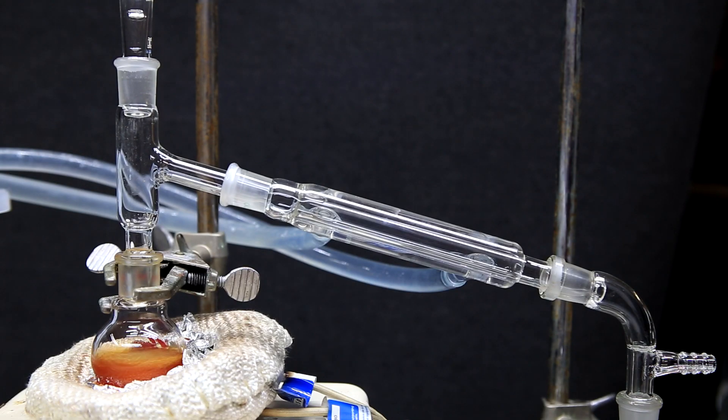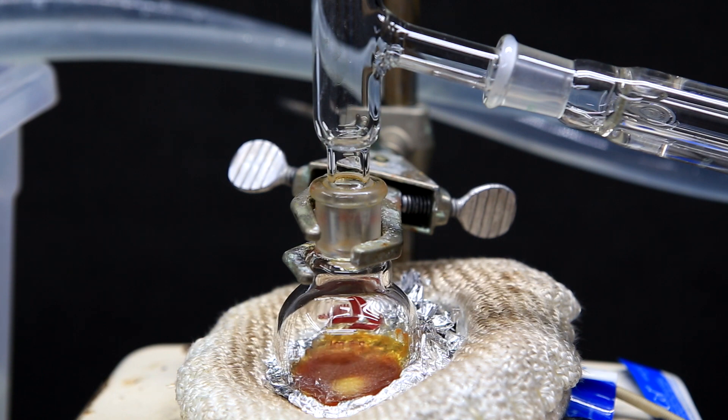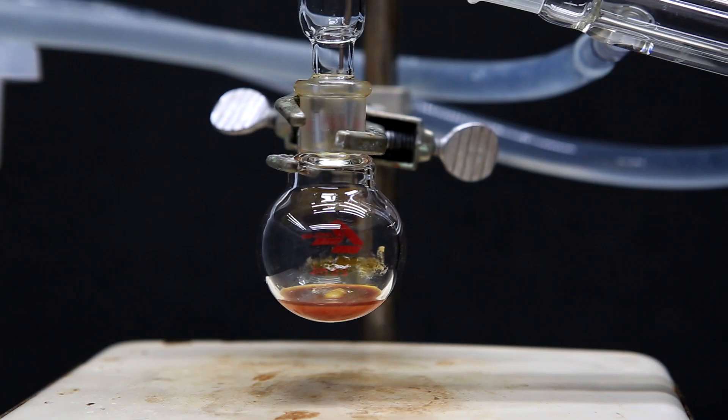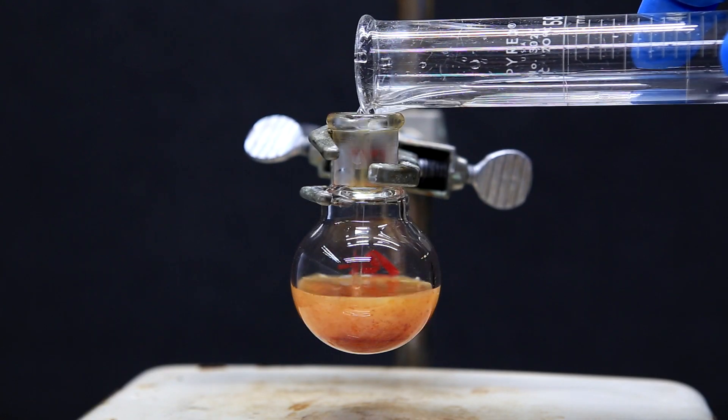Ideally, it would be taken off by vacuum, but since I didn't have one, we had to remove the ethanol by distillation. So using distillation, we remove all of the solvent and we're left with a little crude residue on the bottom. To remove the crude, we first add a little bit of water to dissolve as much as we can.